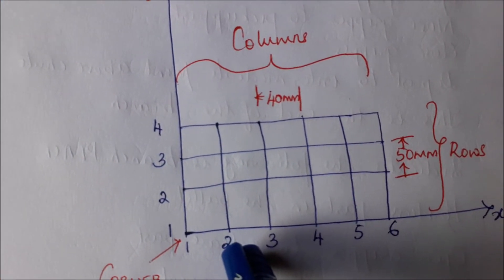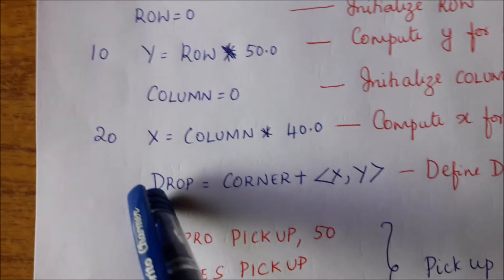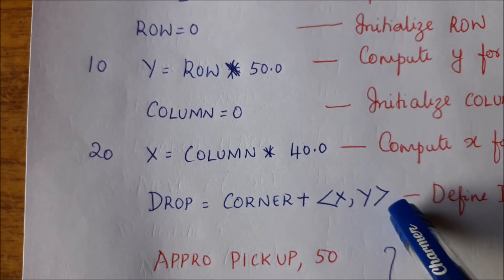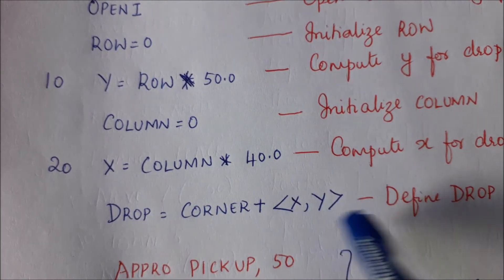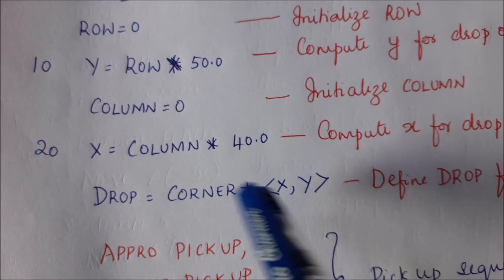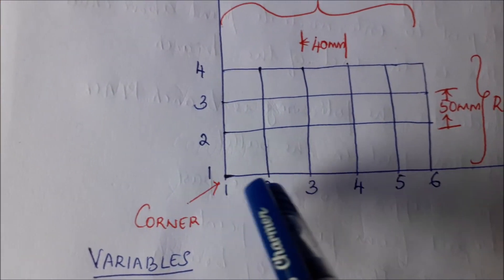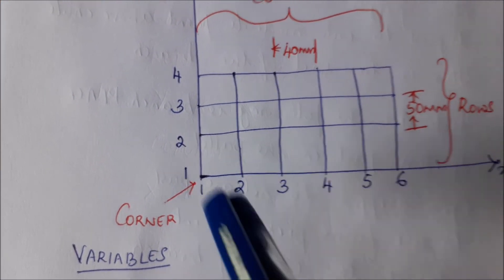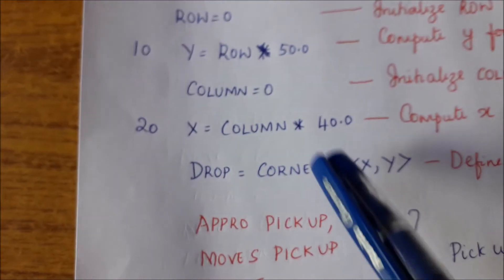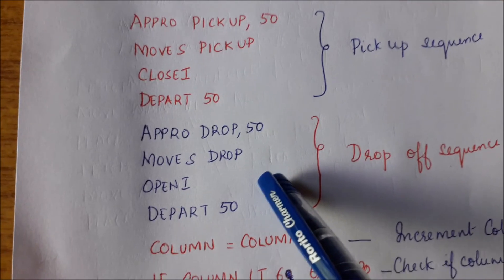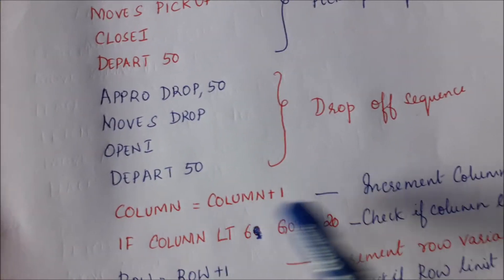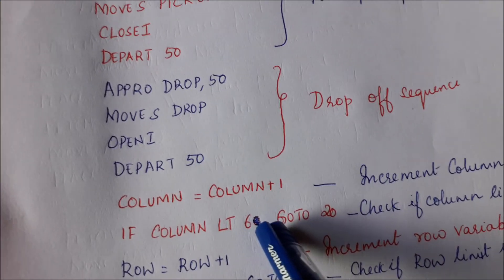Now update drop as corner plus x, y. Y is still 0 — only x has changed. So corner plus 40 mm in the x direction takes us from position 1 to position 2. After updating the drop point, execute the pick-up sequence and drop sequence again. The part is dropped at location 2. Keep repeating this until all 6 locations on the first row are completed.